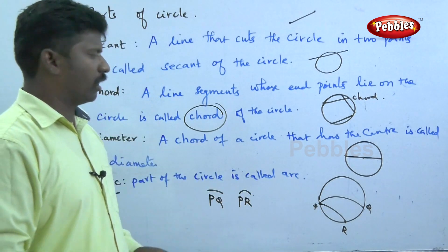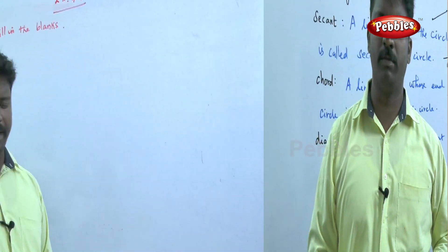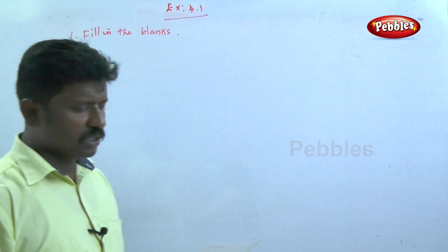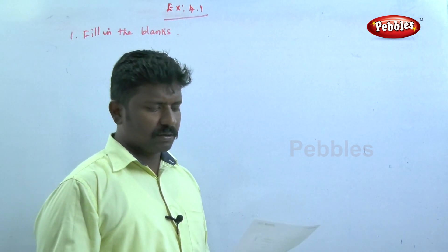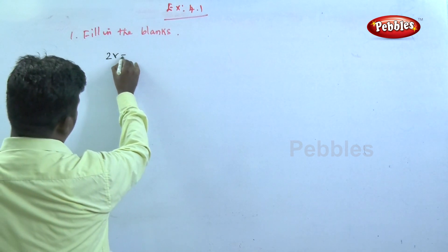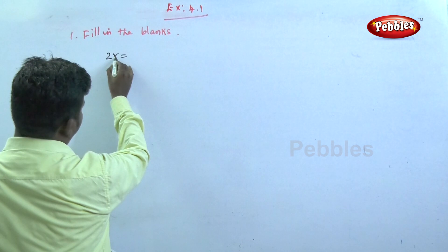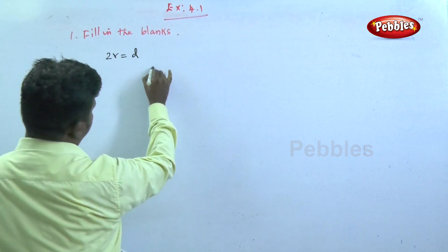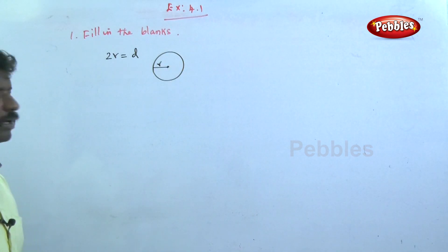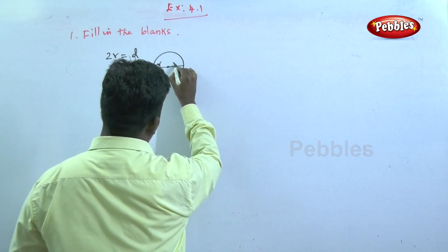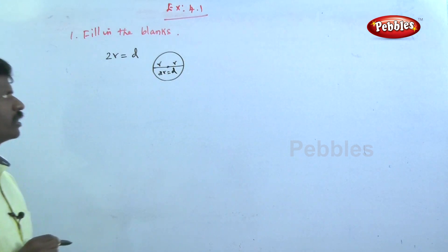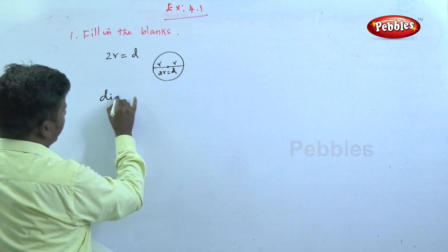Then, arc. Now for Exercise 4.1 — fill in the blanks. The first question: twice of the radius is called dash of the circle. So twice of the radius means 2r. What is 2r? That is diameter. So 2r, twice of the radius, equals diameter. The answer is diameter.